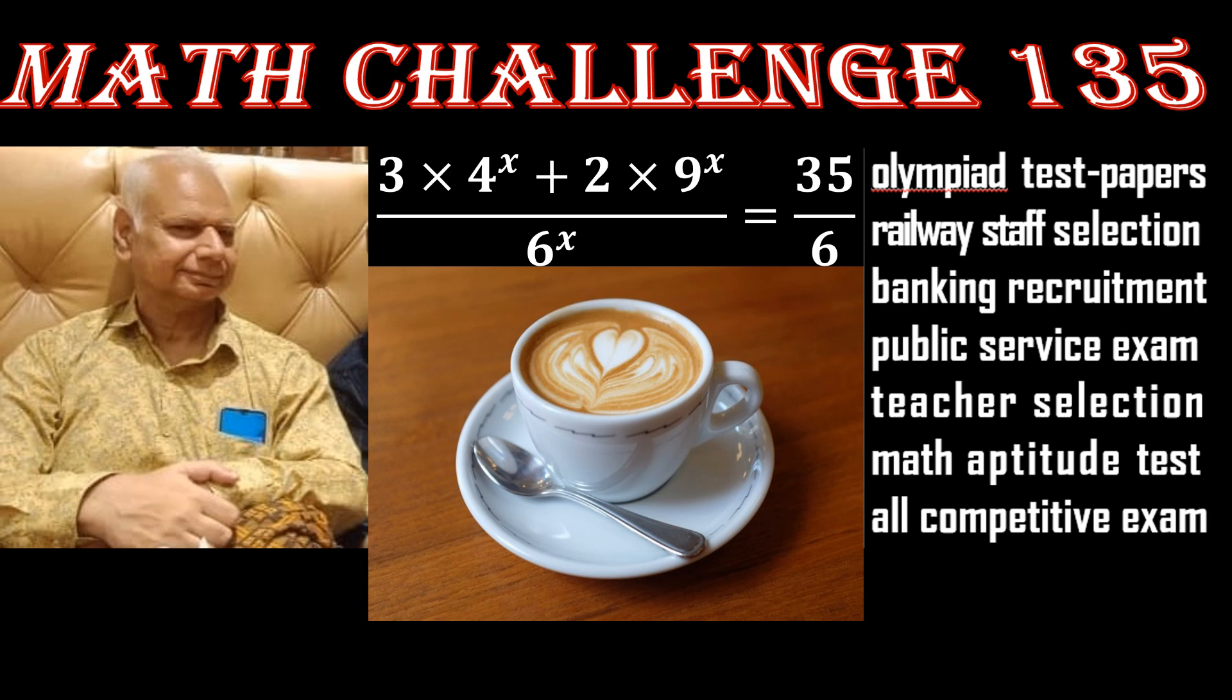Here we are given an exponential equation. Left side numerator is 3 times 4 power x plus 2 times 9 power x. Left side denominator is 6 power x. Right side is a fraction 35 by 6. Time is 4 seconds. Did you say impossible?